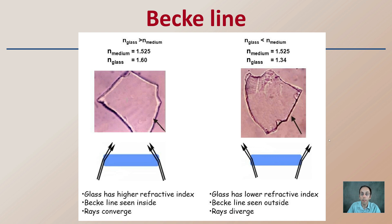This makes the halo effect a little clearer. If the halo is occurring on the inside, that means the glass has a higher refractive index. If the halo is occurring on the outside of that glass, this is a sign that the glass has a lower refractive index.